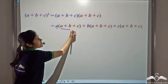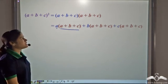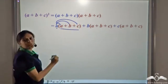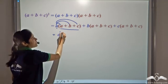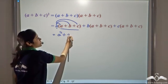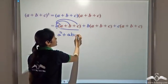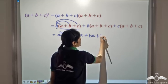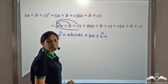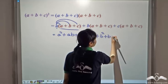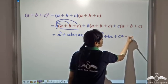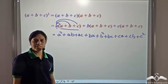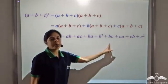Now a is multiplied with the entire expression, which means a is multiplied with each term. So we get a into a is a², a into b is ab, a into c is ac, b into a is ba, b into b is b², b into c is bc, c into a is ca, c into b is cb, and c into c is c². So this is what we get by expanding.